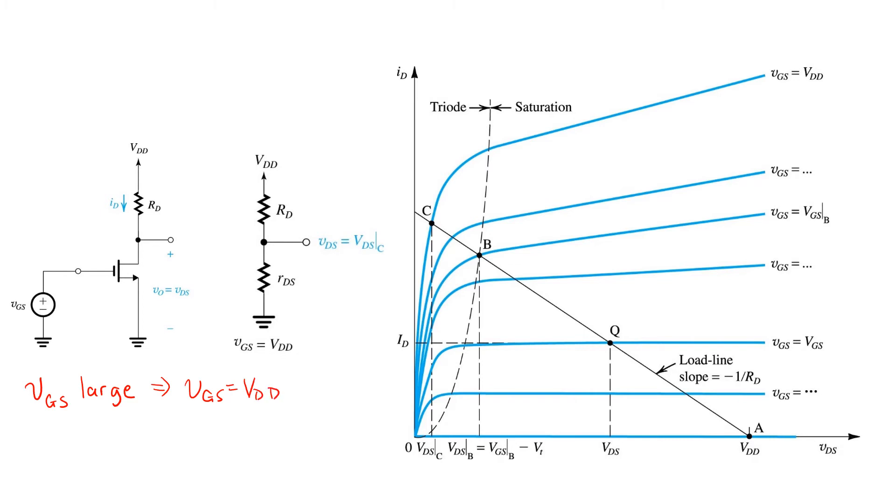Now, in this case, we can expect a relatively large drain current, and as a result, a large voltage drop on the resistor RD, large enough that the transistor will enter triode.